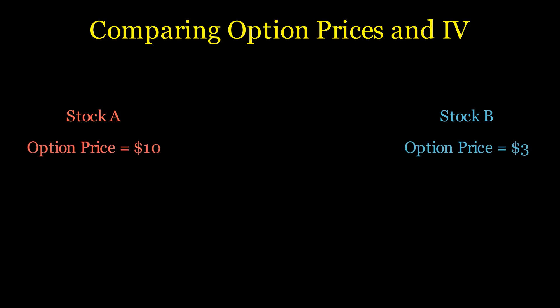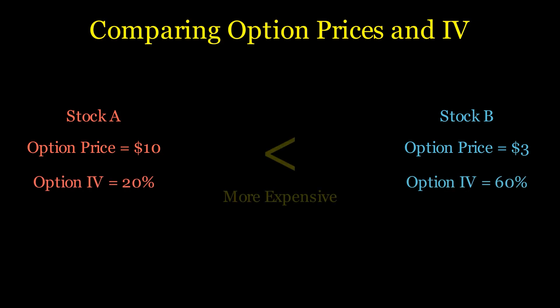You may be tempted to say the option on stock A, but if we convert them to implied volatility, we can see that the option on stock B, in volatility terms, is more expensive. That is why professional options traders will refer to option prices in terms of implied volatility.